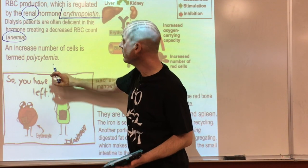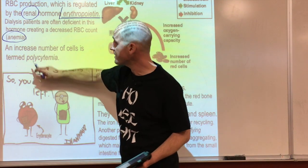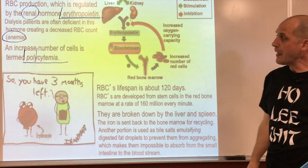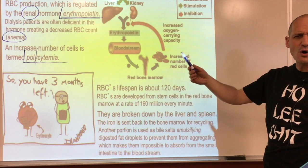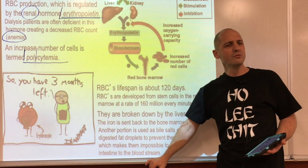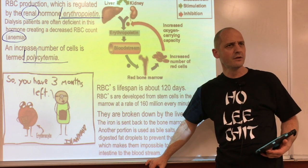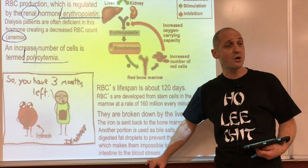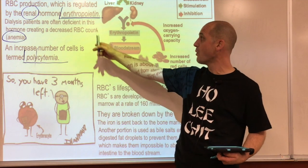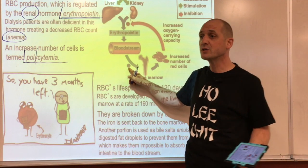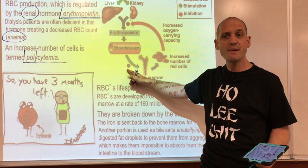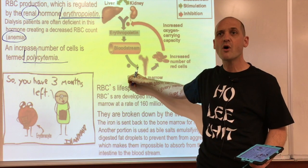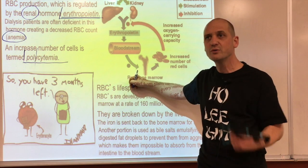An increased number of red blood cells is called polycythemia - 'poly' means many. Athletes sometimes do blood doping: they train at high altitude like Colorado Springs, where the air has less oxygen so the body makes more RBCs to carry the same amount of oxygen. When they come down to sea level to compete, they have more RBCs and more oxygen going to tissues, giving them more energy.